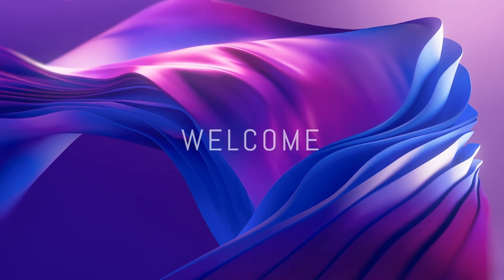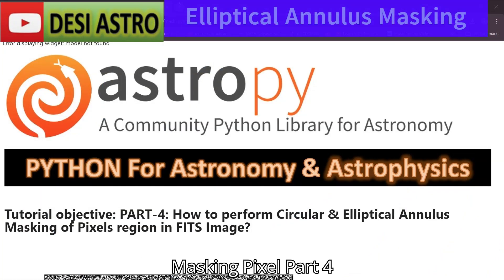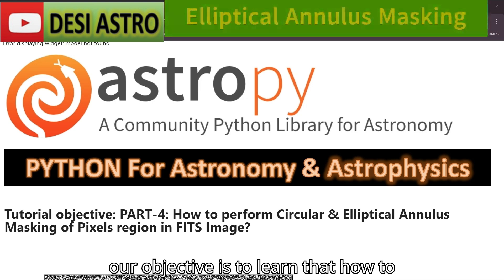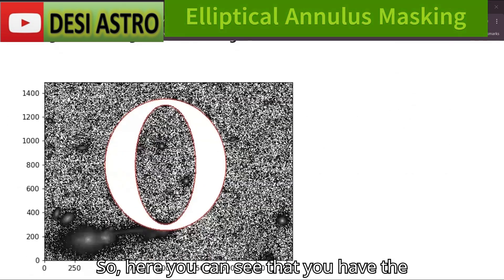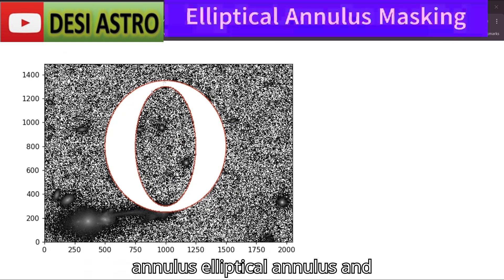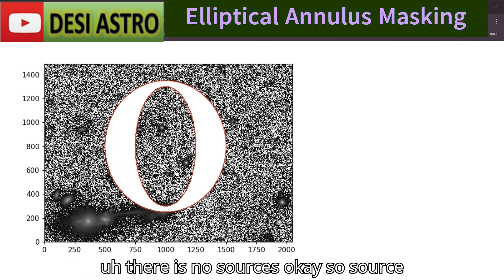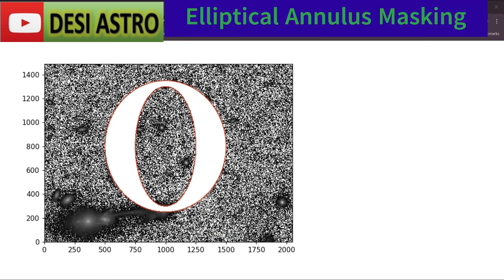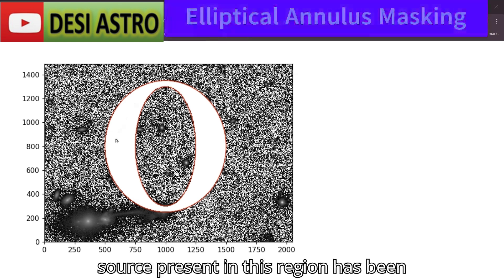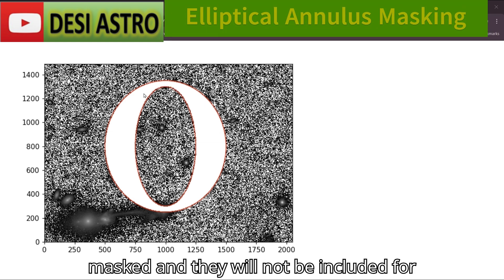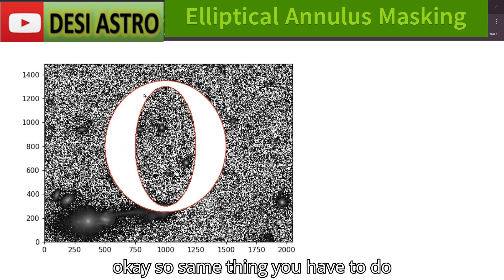Welcome to the C-Strope. In this Python for Astropy project tutorial on masking, part 4, our objective is to learn how to perform circular and elliptical annulus masking in a fits image. You can see the elliptical annulus — inside this region there are no sources, so sources have been set to zero. Beyond that region, sources present have been masked and will not be included for photometry and image data analysis.